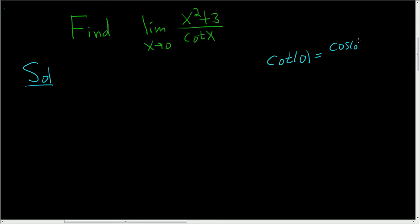which is cosine 0 over sine 0, which is 1 over 0. So that fails horribly.